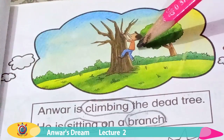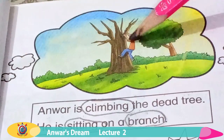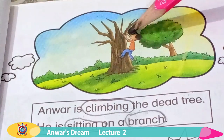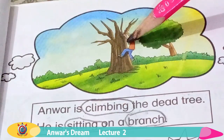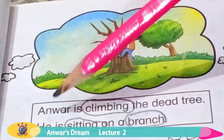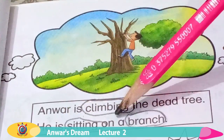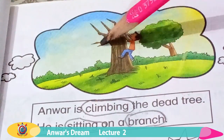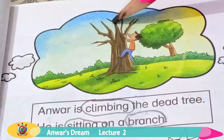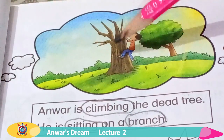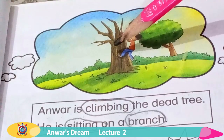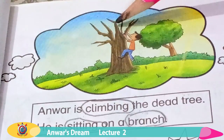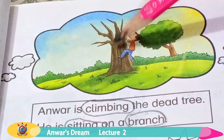What is Anwar doing? Anwar is climbing. Can you see Anwar? He is climbing the dead tree. Anwar dead tree ke upar charh raha hai. Anwar is sitting on a branch. What is a branch, students? This is a branch — a part of a tree which grows out from the trunk. This is the trunk, and this is the part of the tree which grows out from the trunk.